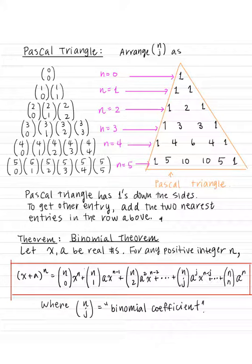Pascal's Triangle is used to compute the binomial coefficients of a polynomial of the form (x + y)^n. For example, if you expand (x + 1)^2, that's 1x² + 2x + 1, so the coefficients are 1, 2, and 1 in that order.